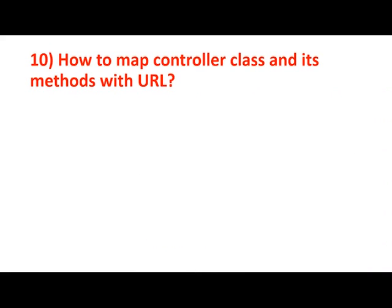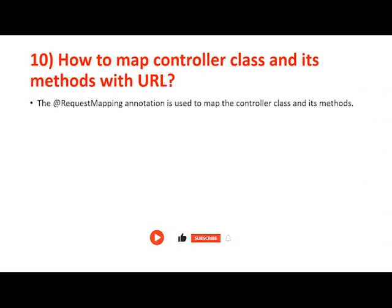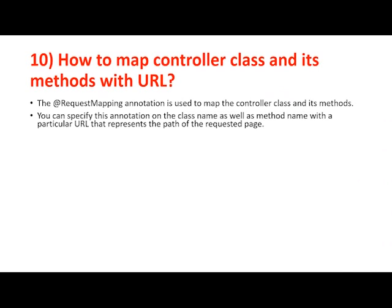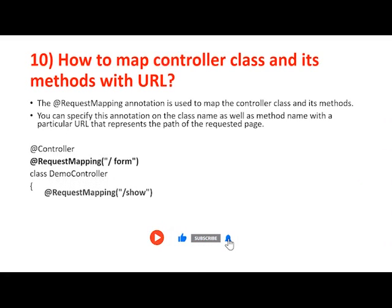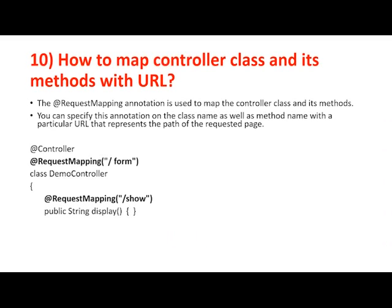Question nine: how to map a controller class and its methods with a URL? We can use the @RequestMapping annotation as a base annotation at class level and method level. Other HTTP method annotations like @GetMapping, @PostMapping, @PutMapping, @DeleteMapping can be applied only at the method level, but @RequestMapping can map the URL at both the class and method level. We need to specify the URL and method types in its details.